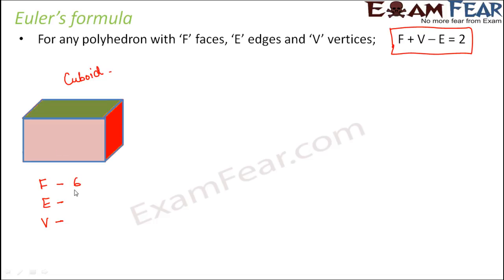How many edges? You have 1, 2, 3, 4, 5, 6, 7, 8, 9, 10, 11, 12. So total 12 edges and how many vertices? 1, 2, 3, 4, 5, 6, 7 and 8. So this is at the backside which we can't see. So there are total 8 vertices.